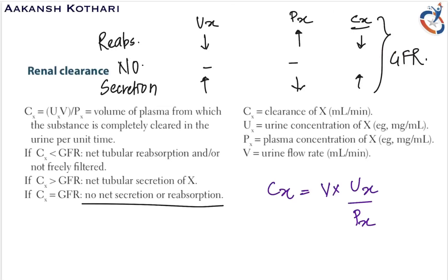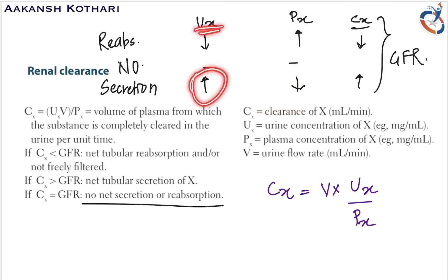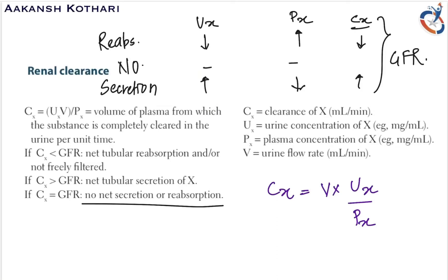When the clearance of a substance is high, the concentration in the plasma is less but the concentration in the urine is more. When fluid flows through the nephron, substances are secreted into the urine, increasing concentration. Hence, clearance can be greater than the glomerular filtration rate due to tubular secretion.